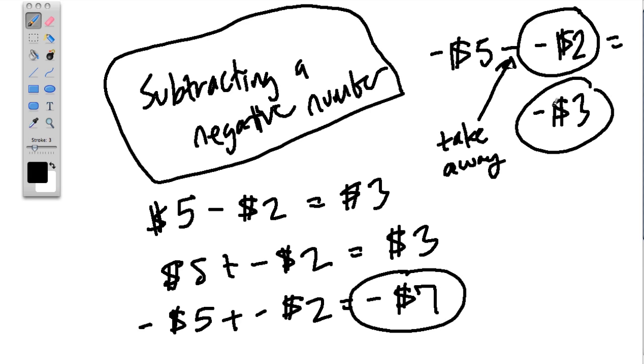You only have negative $3, or only $3. So subtracting a negative can be thought of as taking away of debt.